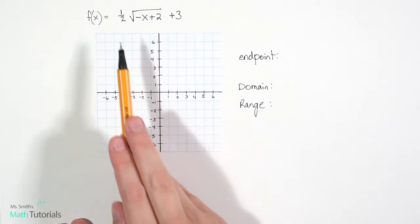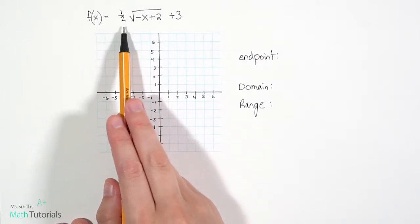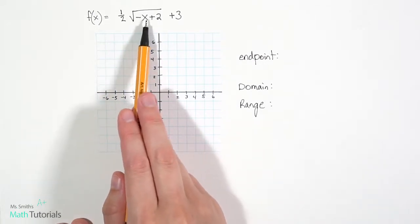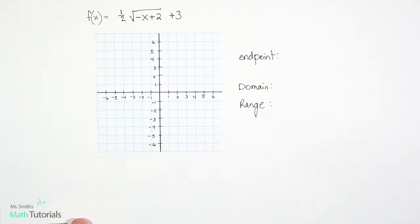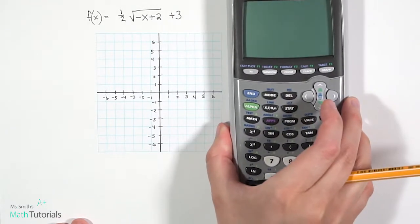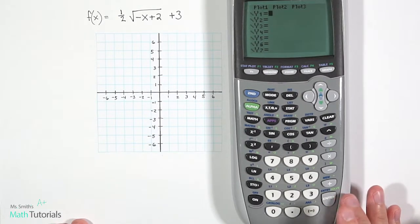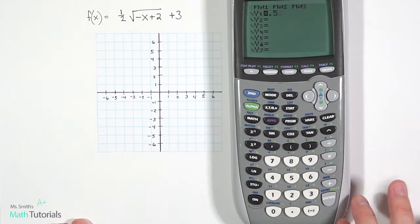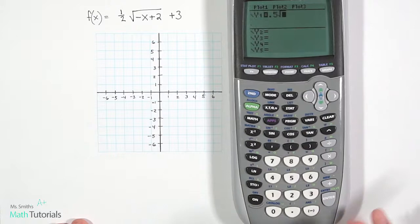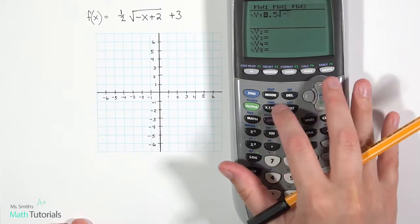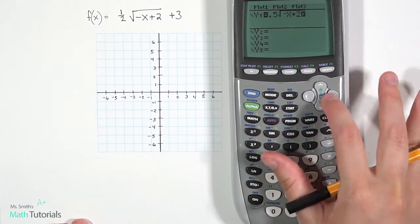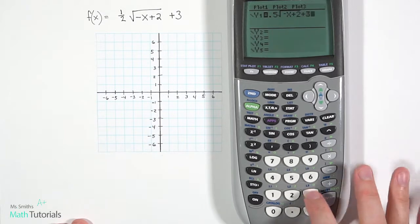Let's look at one more together. So for this one, we have f of x equals 1 half times the square root of negative x plus 2 plus 3. So we want to bring out our graphing calculator and type that in to our y equals. So you could do one half or you could just do 0.5. It's a little easier. Square root of negative x plus 2. Come out of the radical plus 3.